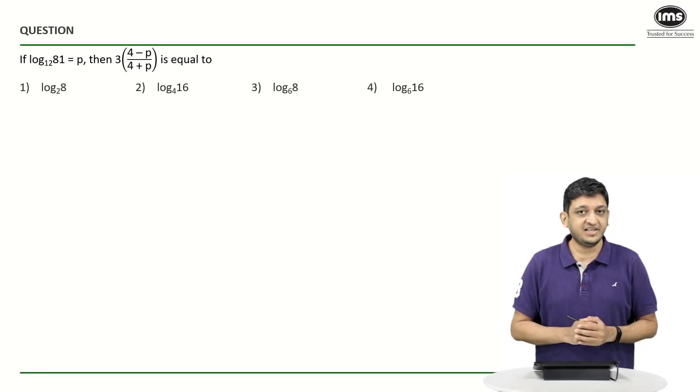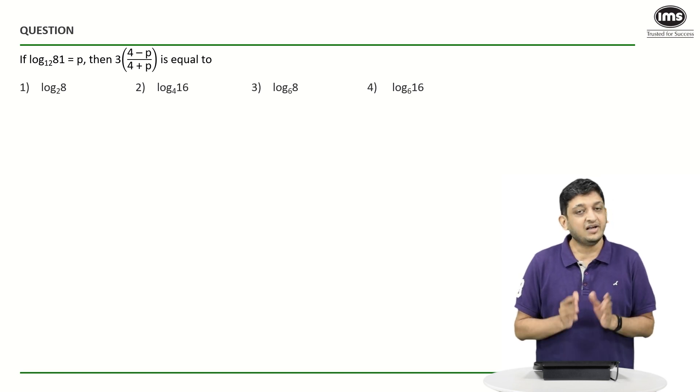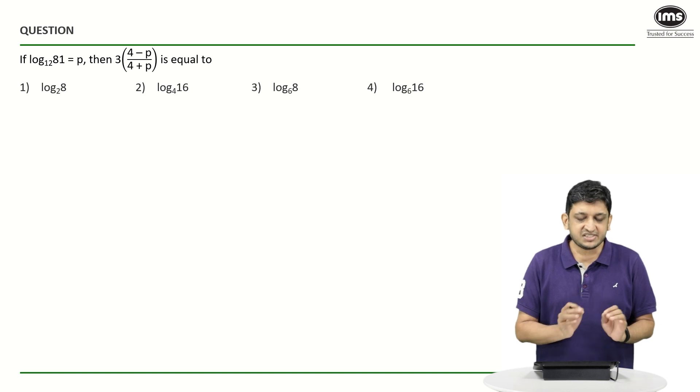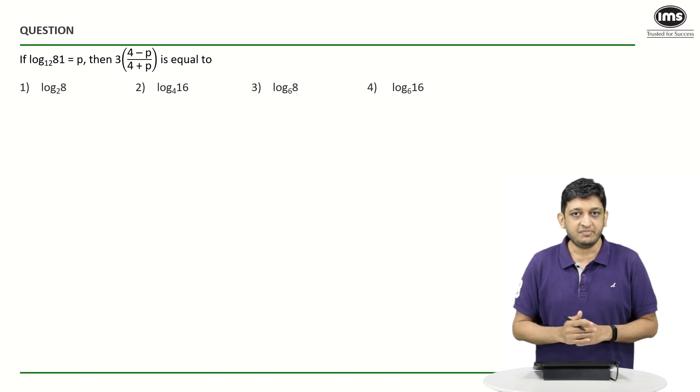The question that we have here is rather easy to look at. There is not a lot of storytelling. It simply tells you that log of 81 to the base 12 is P. Then what is the value of 3 times 4 minus P divided by 4 plus P? It's a very straightforward question. The options are also nice and distinct if you look at them.